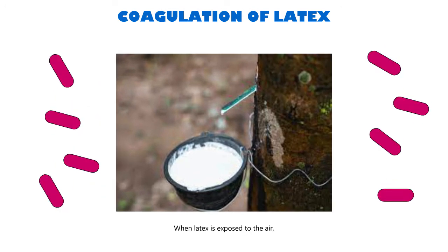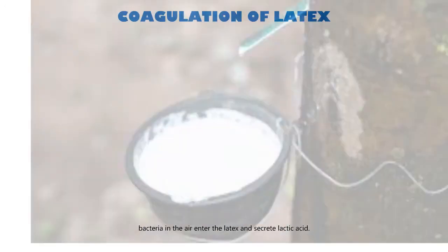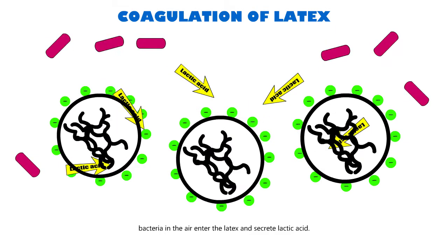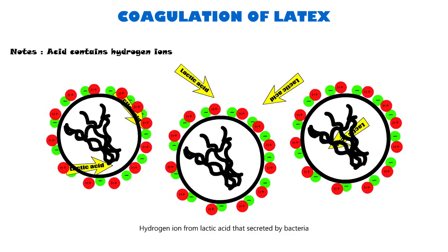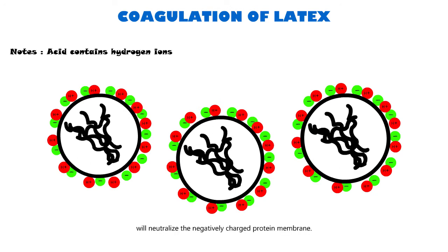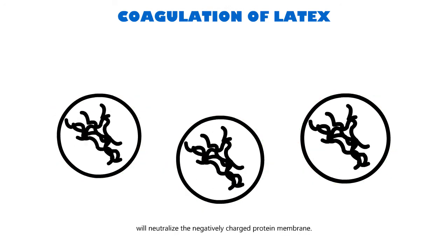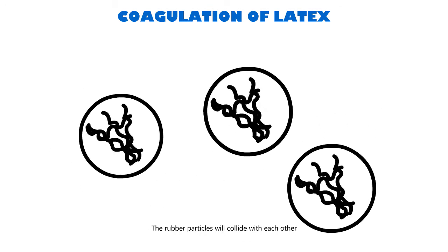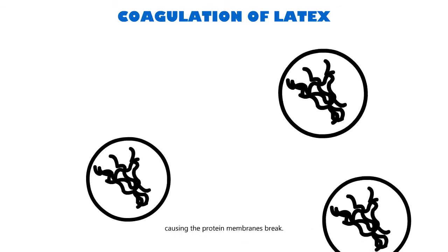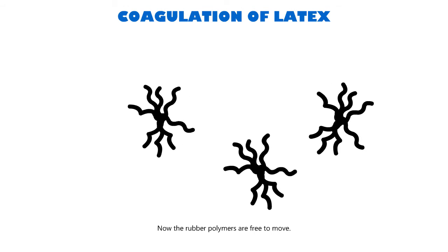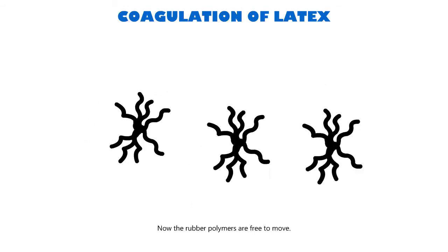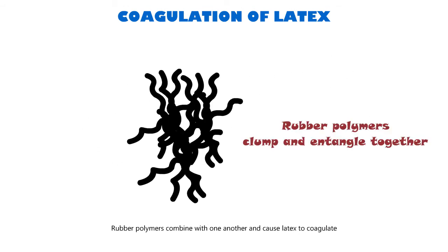When latex is exposed to the air, bacteria in the air enter the latex and secrete lactic acid. Hydrogen ions from the lactic acid secreted by bacteria will neutralize the negatively charged protein membrane. The rubber particles will collide with each other, causing the protein membranes to break. Now the rubber polymers are free to move, and they combine with one another, causing the latex to coagulate.